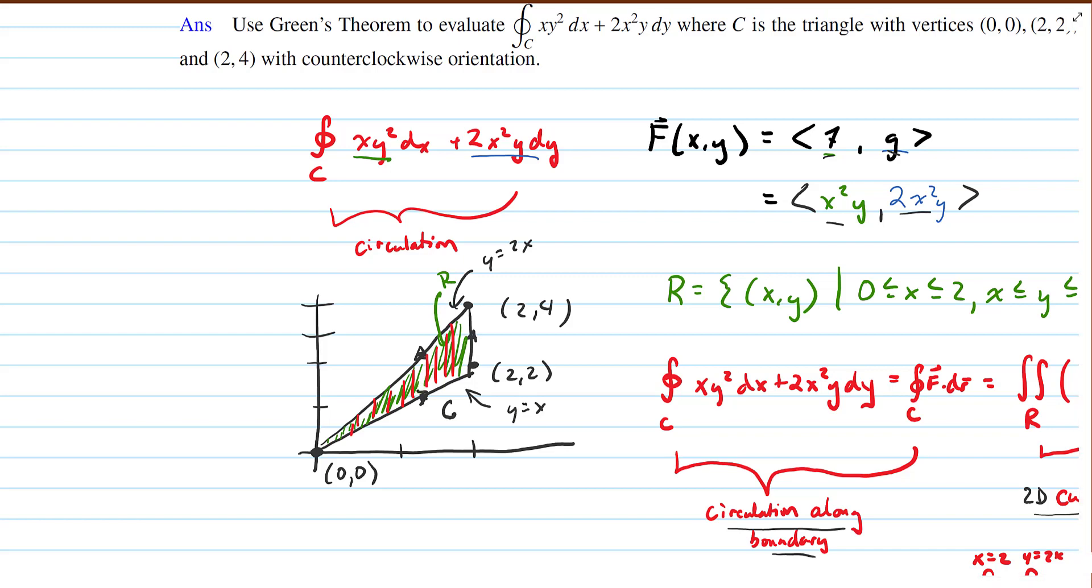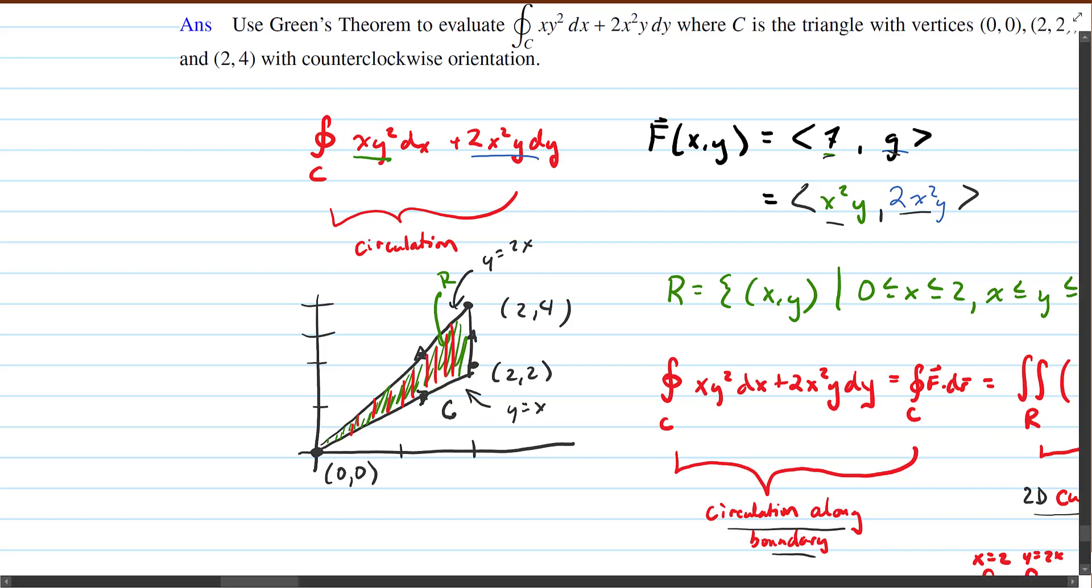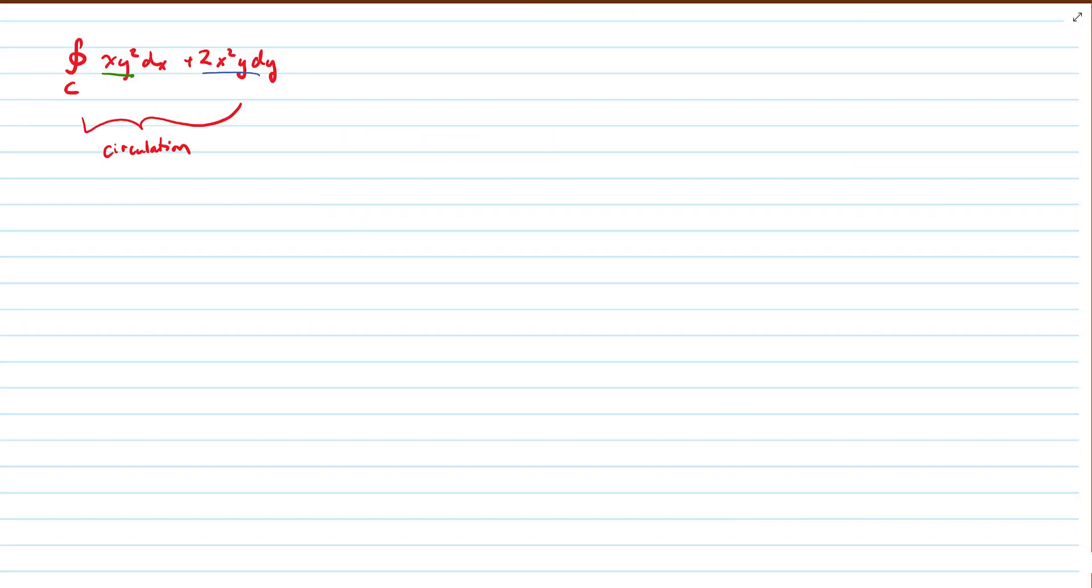That wraps up the question, unless you're curious about why this is a circulation form, because we don't usually write Green's theorem this way. So I'll pick that up now. So I said this was the circulation form of a line integral, and let's just confirm why that's so.